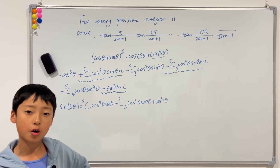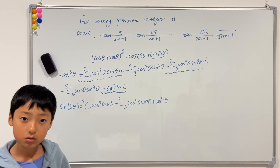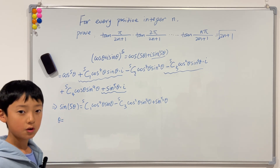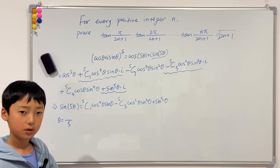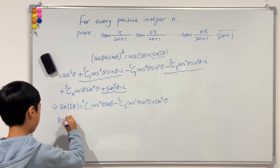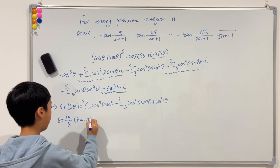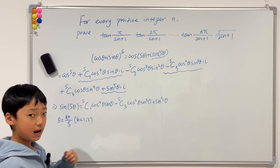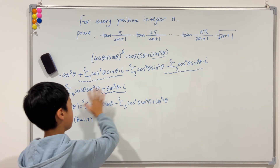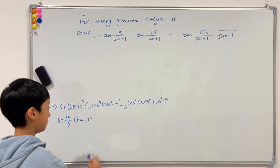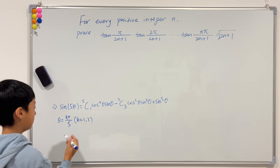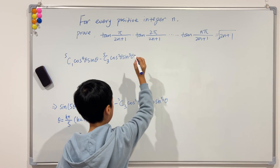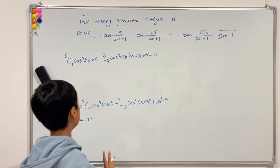One thing all polynomials have in common is that one side equals 0. So we want sine of 5 theta to equal 0. We let theta equal k pi over 5. In our case, k can only be 1 or 2, since we've restricted n to 2. So now we can set up our quadratic equation, doing some manipulating to make this expression equal to 0.